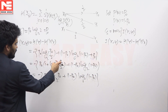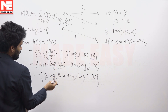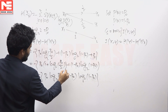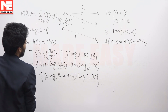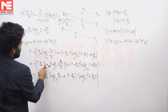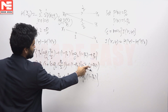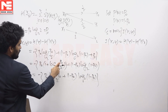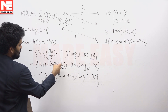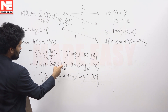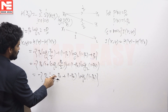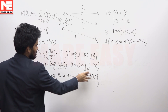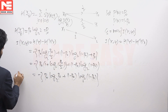Taking P0 common and expanding log(P0/2) as log P0 minus log 2 base 2, and since log base 2 of 2 equals 1, the minus 1 and plus 1 cancel. This simplifies to P0 log base 2 of P0 plus (1 - P0) log base 2 of (1 - P0), which is the expression for I(X;Y).